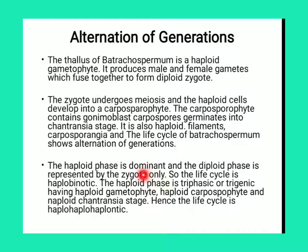The haploid phase is dominant because the thallus structure is haploid, the gametes are haploid, the spores are haploid, and the monospore is also haploid. The diploid phase is represented only by the zygote. So the life cycle is known as the haplontic life cycle, and the haploid phase is triphasic — meaning the haploid phase is developed three times in the life cycle: haploid gametophyte, haploid carposporophyte, and haploid Chantransia stage. Hence, the life cycle is known as the haplontic life cycle and also the haplobiotic life cycle.